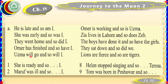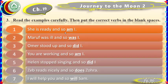If the verb written is 'is,' you write 'so is Uzma.' If it is 'lives,' you write 'so does Zeb.' For example: 'She is ready and so am I.' 'Maruf was ill and so was I.' 'Helen stopped singing and so did Teresa' — 'did' is used here because 'stopped' is the second form of the verb. Let us move forward and do the exercise.